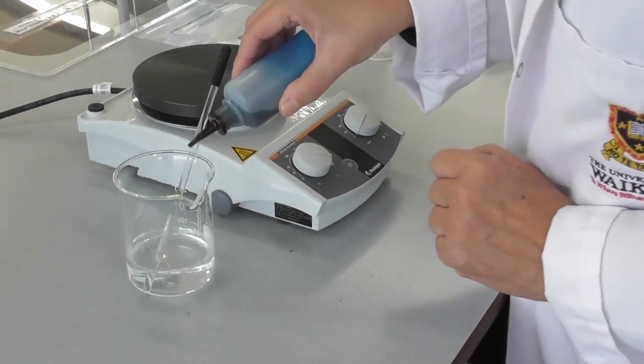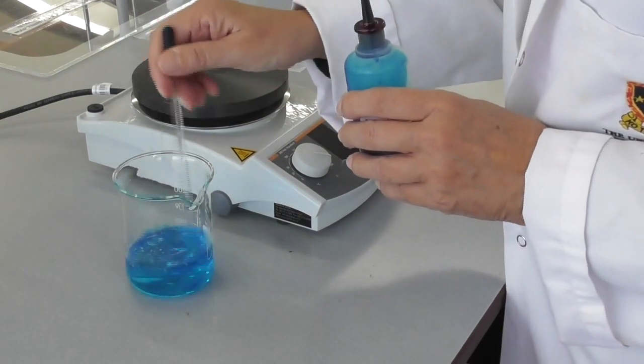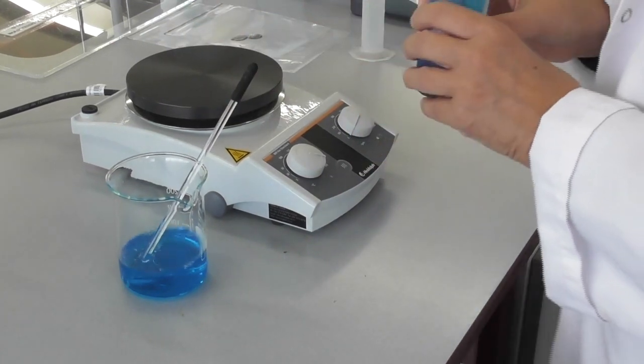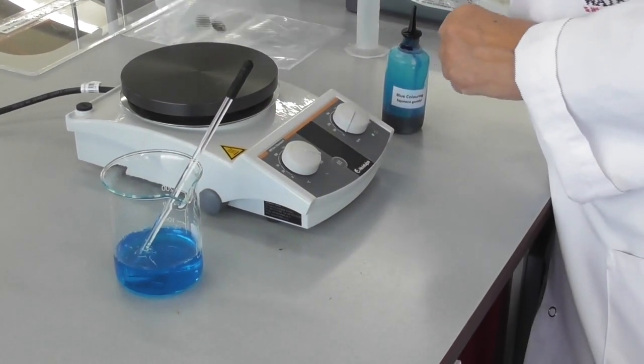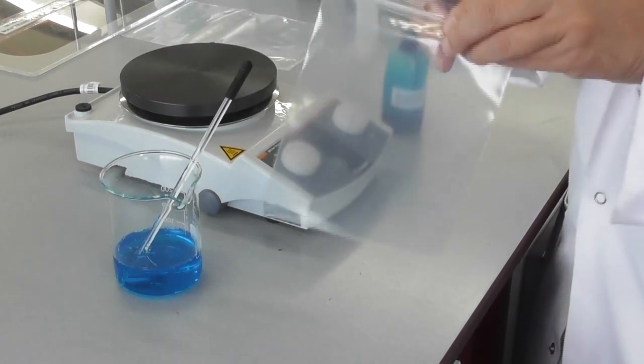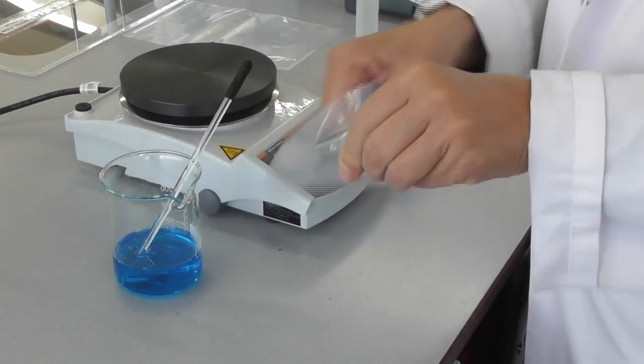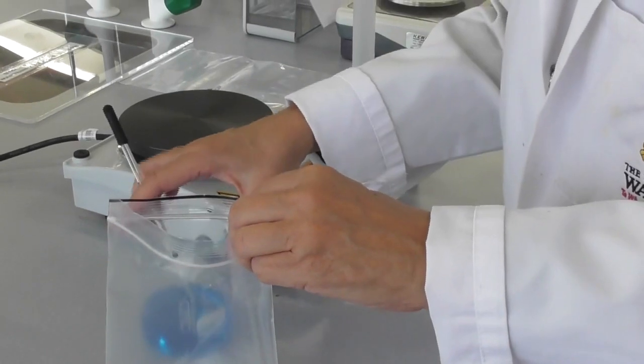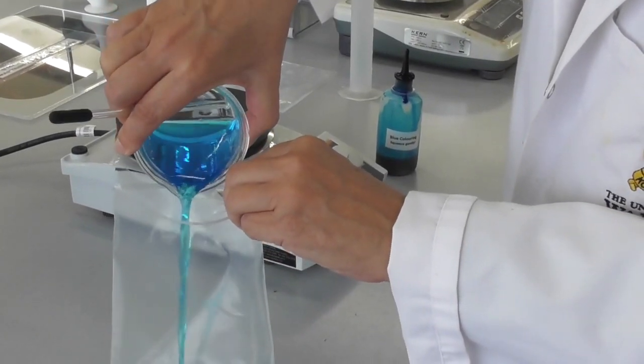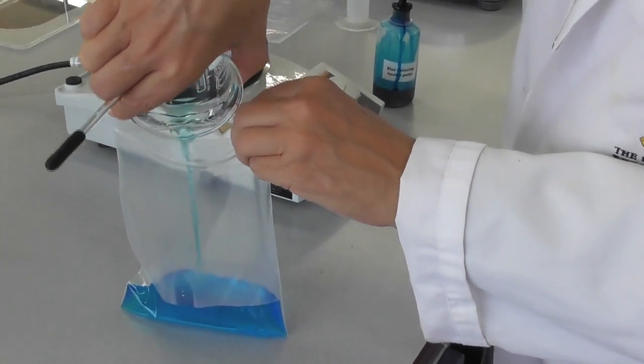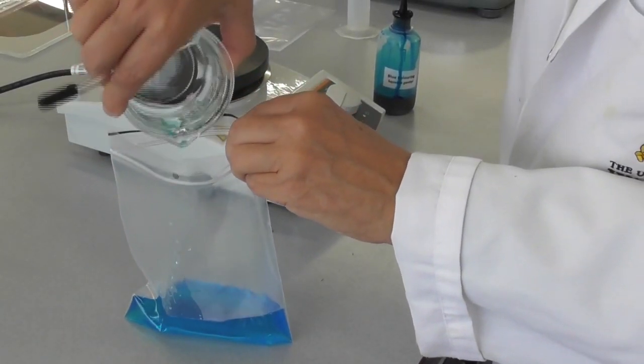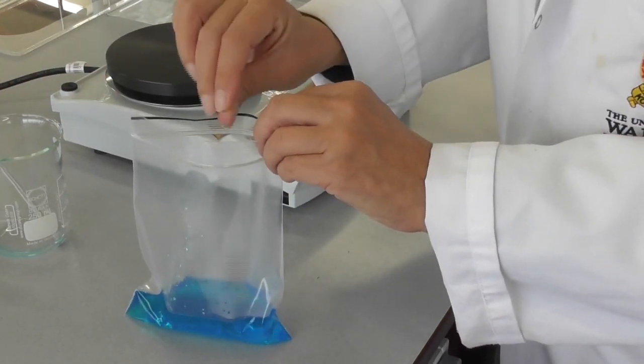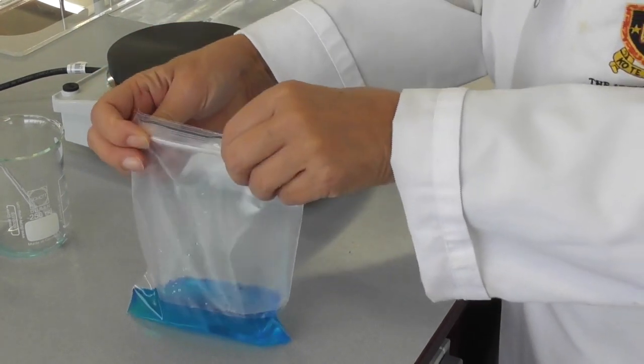We can add a few drops of food coloring of our choice. Then we pour the hot solution into a Ziploc bag. We add a metal disc into the bag and close it up.